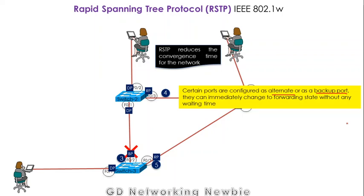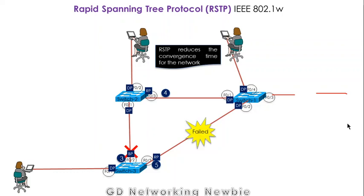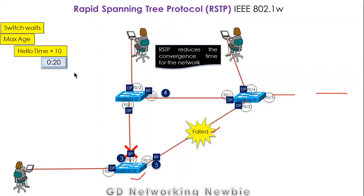For example, in a network if a link has failed, in STP that particular affected switch has to wait as per protocol, and this waiting time is dictated by max age, which is 10 times hello time — that is 20 seconds. But in RSTP that is 6 seconds, which is 3 times hello time. Since hello time is 2 seconds, in this way we also save some time for convergence.